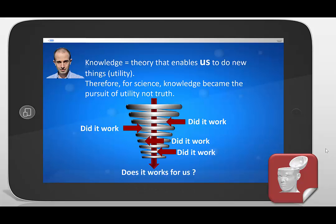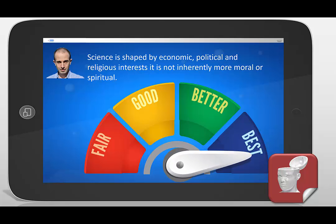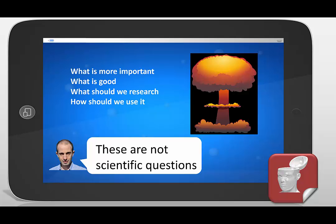Science is always asking: does it work for us as sapien beings? Science is also shaped by economic, political, and religious interests. It is not inherently more moral or more spiritual — science is not heading towards a better moral or spiritual world. A good example of that is the atomic bomb. What is good, what should we research, and how should we use it are not scientific questions. Scientific questions are about how it all works, but not about how it gets used.